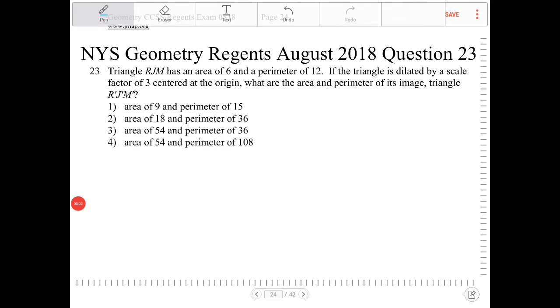Triangle RJM has an area of 6 and a perimeter of 12. If the triangle is dilated by a scale factor of 3 centered at the origin, what are the area and perimeter of the image triangle R'J'M'? Let me write this information down. Area equals 6, perimeter equals 12.